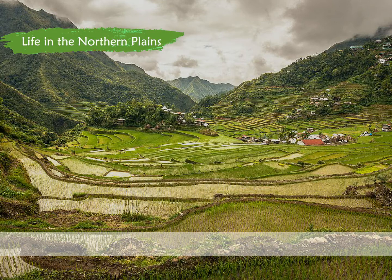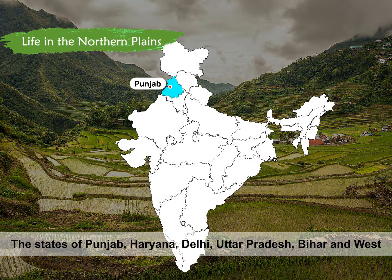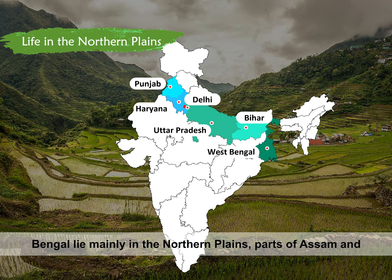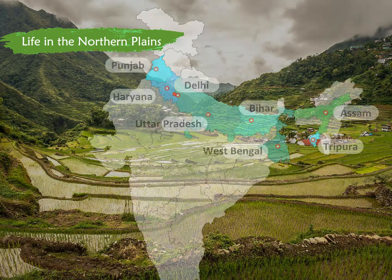Life in the Northern Plains: The states of Punjab, Haryana, Delhi, Uttar Pradesh, Bihar, and West Bengal lie mainly in the northern plains. Parts of Assam and Tripura are also included in these plains.